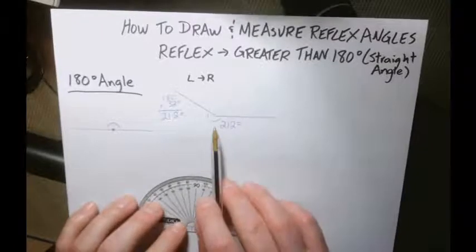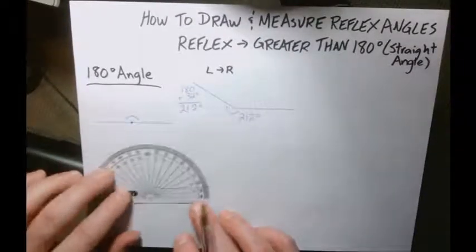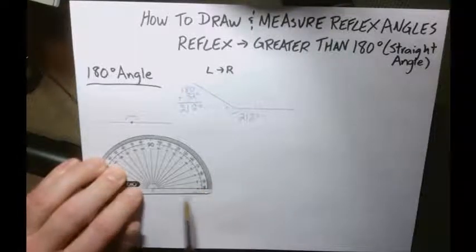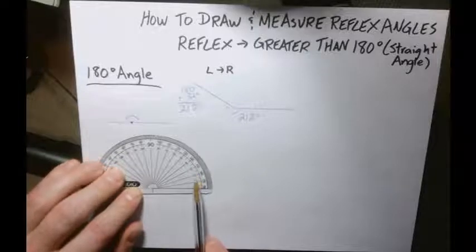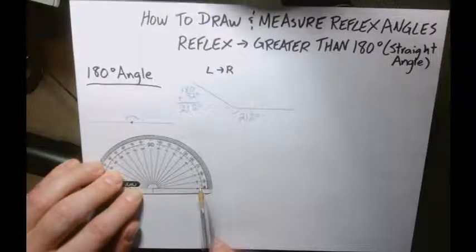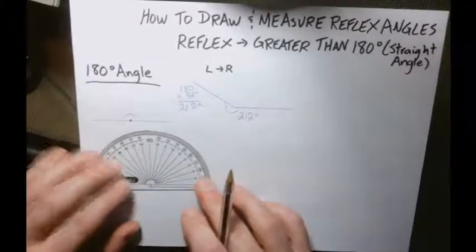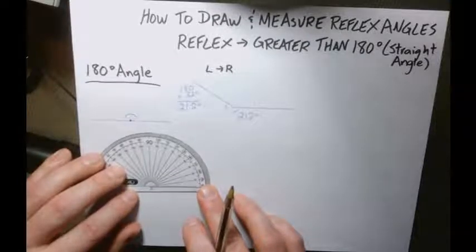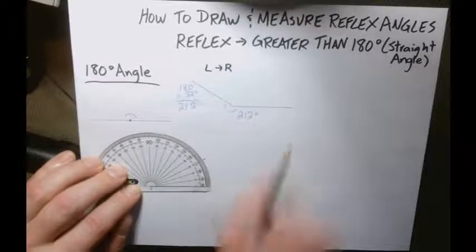Now we're going to do the version where we know the measurement before. So I'm going to draw a line right here. I'm going to line it up. Let's do another left to right one, but let's make a big one. So I'm going to line up my protractor here and I'm going to come to right here where you see it's 150. So I'm just going to write 150 degrees off to the side. That's not my finished completed angle yet.